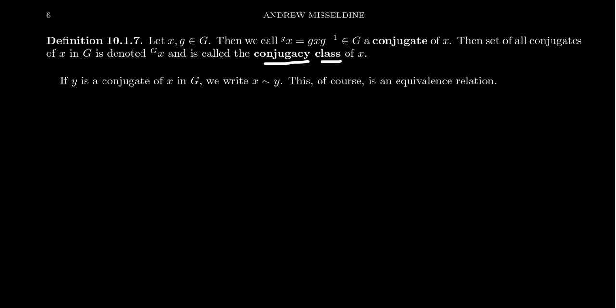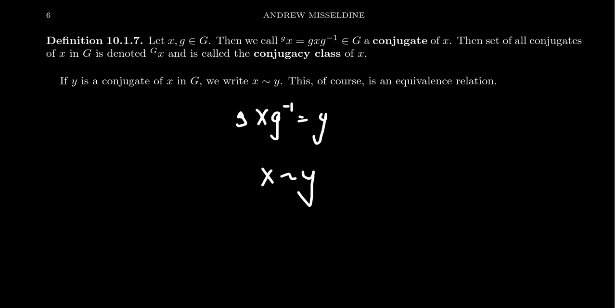The reason we call it a conjugacy class is that conjugation forms an equivalence relation. If y is a conjugate of x, that means there exists some element g such that g x g-inverse equals y. This is what we mean by x tilde y — there exists some little g inside the group such that this holds. So x and y being conjugates is an equivalence relation: it's reflexive, symmetric, and transitive.